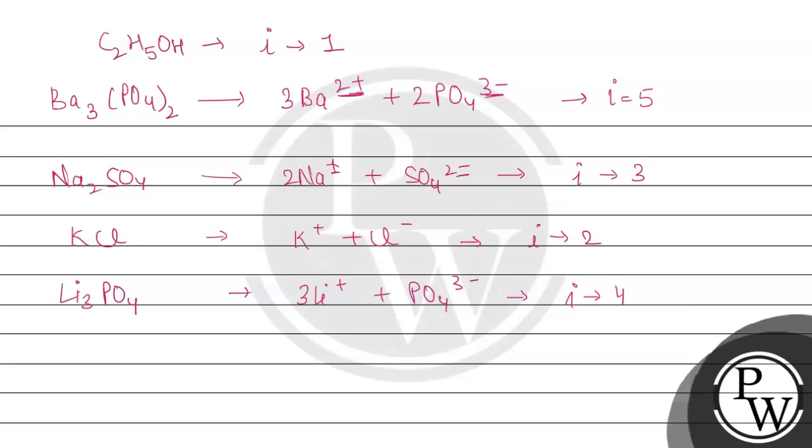All iota values are more than C2H5OH, which was 1 only. We have got the values 5, 3, 2, and 4. So the answer will be 4, because the freezing point will be lower for those solutions which have a higher value of the van't Hoff factor than C2H5OH. The final answer will be 4.